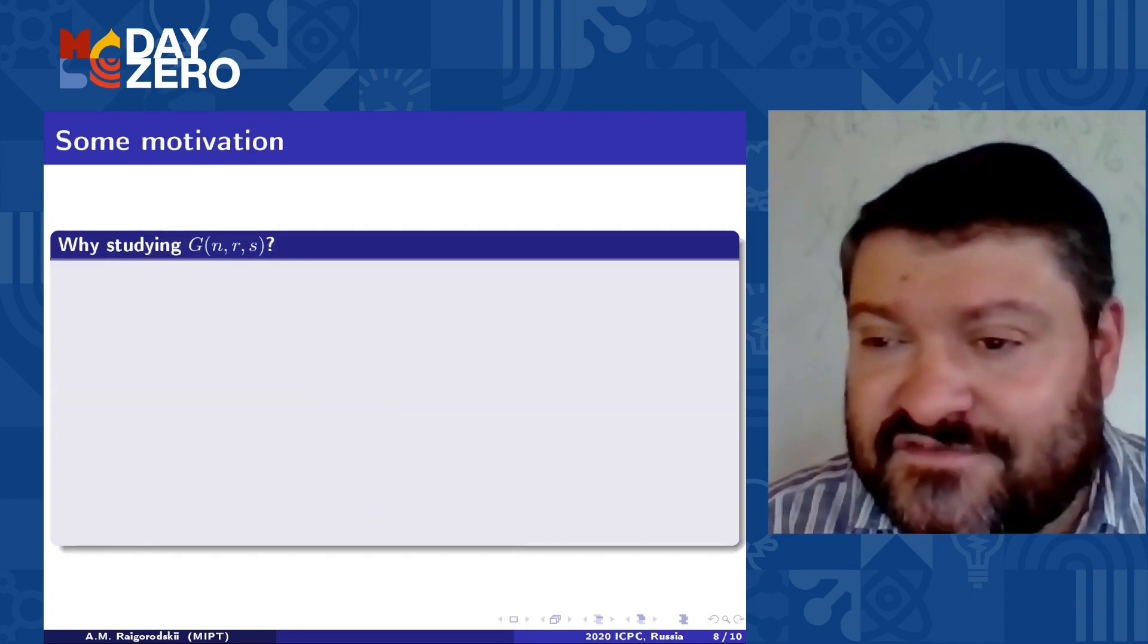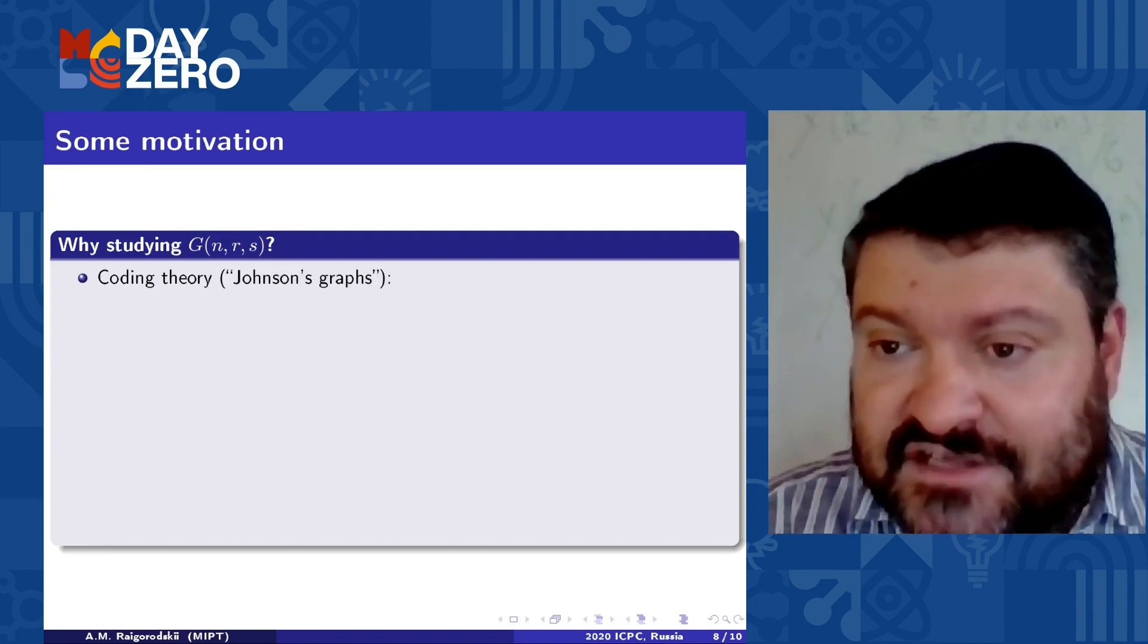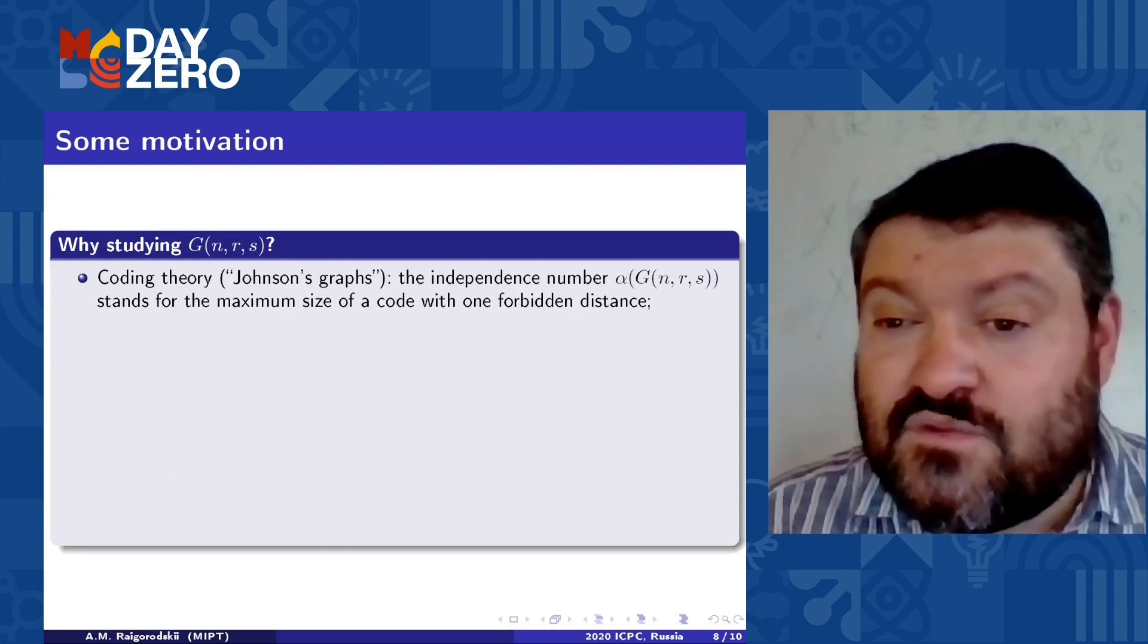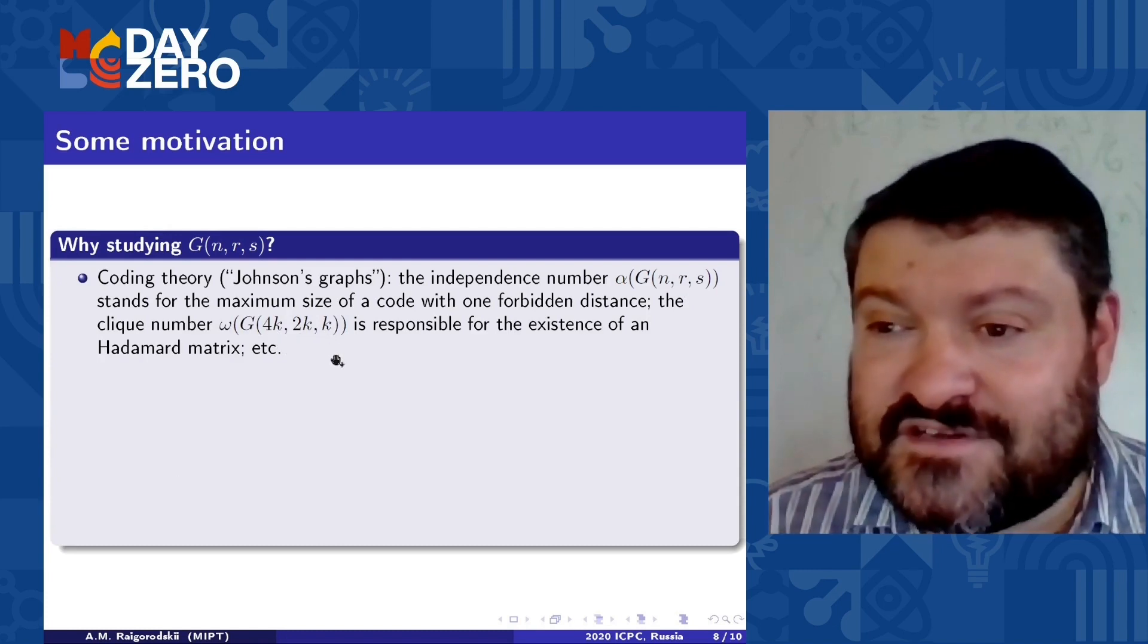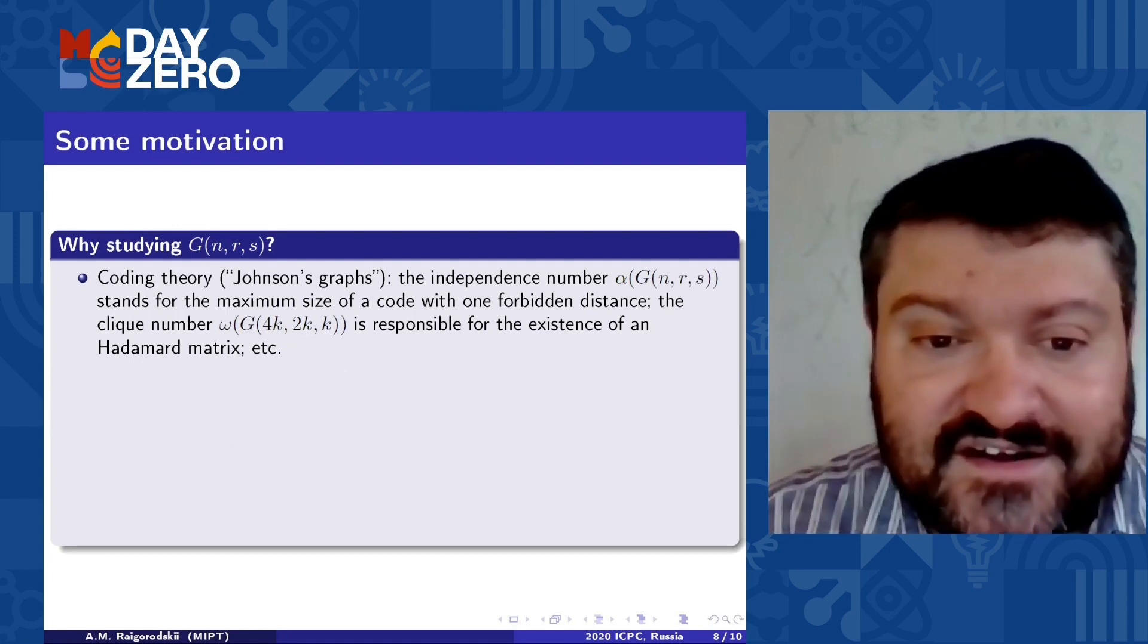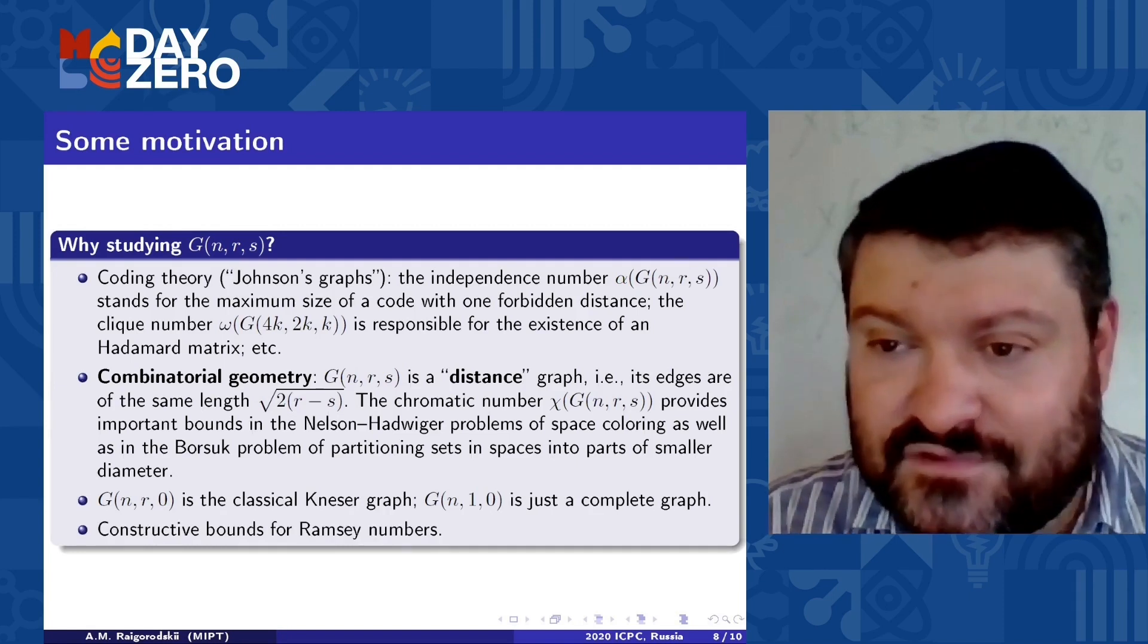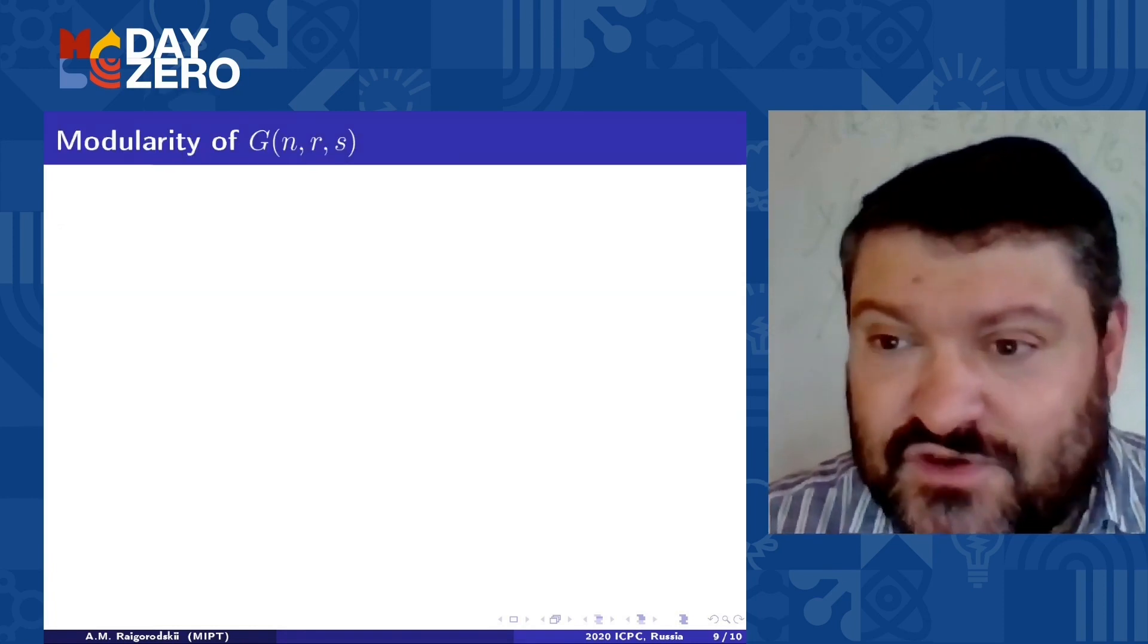Such graphs are very important in different parts of mathematics and computer science. For example, it's very important in coding theory. And here in coding theory, it's called Johnson's graph. For example, the independence number, the so-called stable independence number of a graph of this graph stands for the maximum size of a code with one forbidden distance. And the click number of this specific graph with such parameters is responsible for the existence of the so-called Hadamard matrix, which is very famous also in coding theory in combinatorics and many different applications. In combinatorial geometry, in extremal graph theory in Ramsey theory, which is also very important for theoretical computer science for algorithms. And I spoke about it in my lecture sometimes ago here.